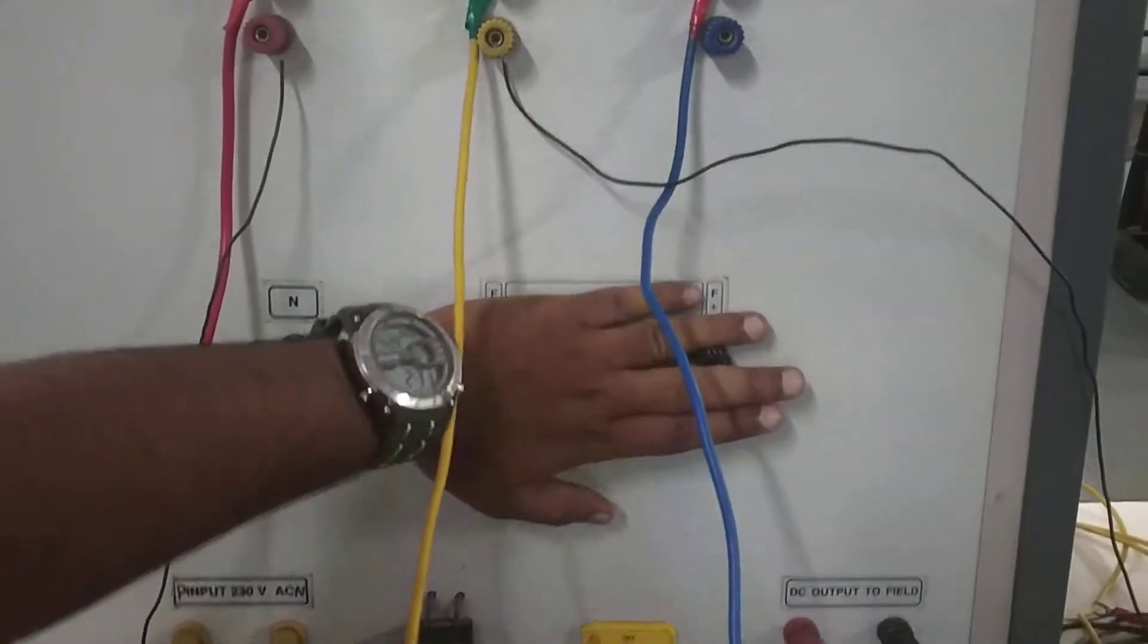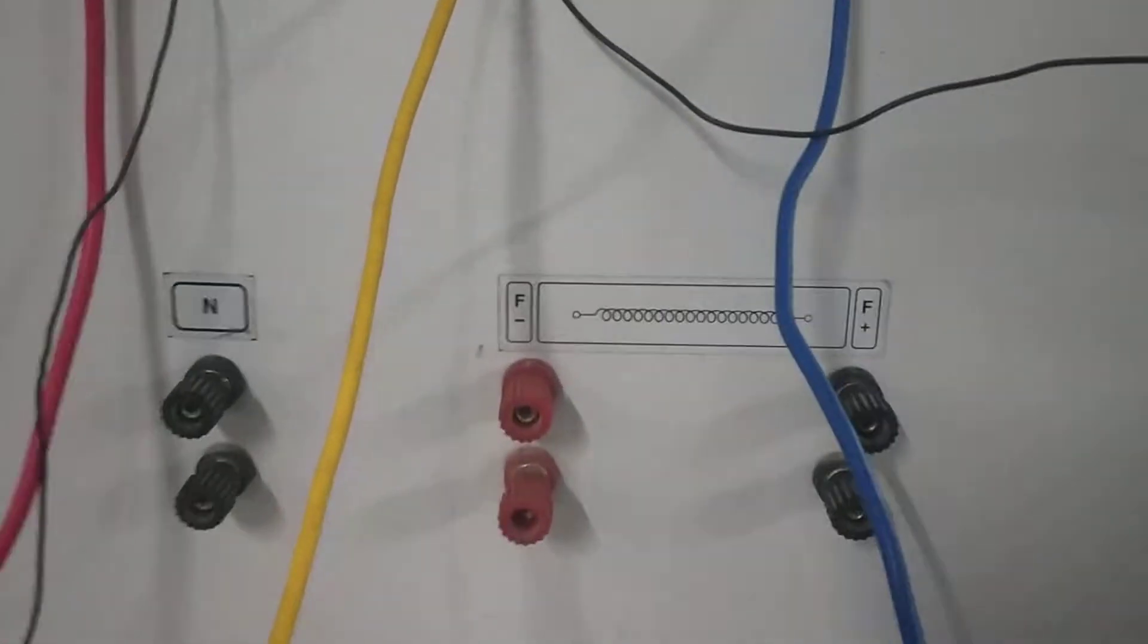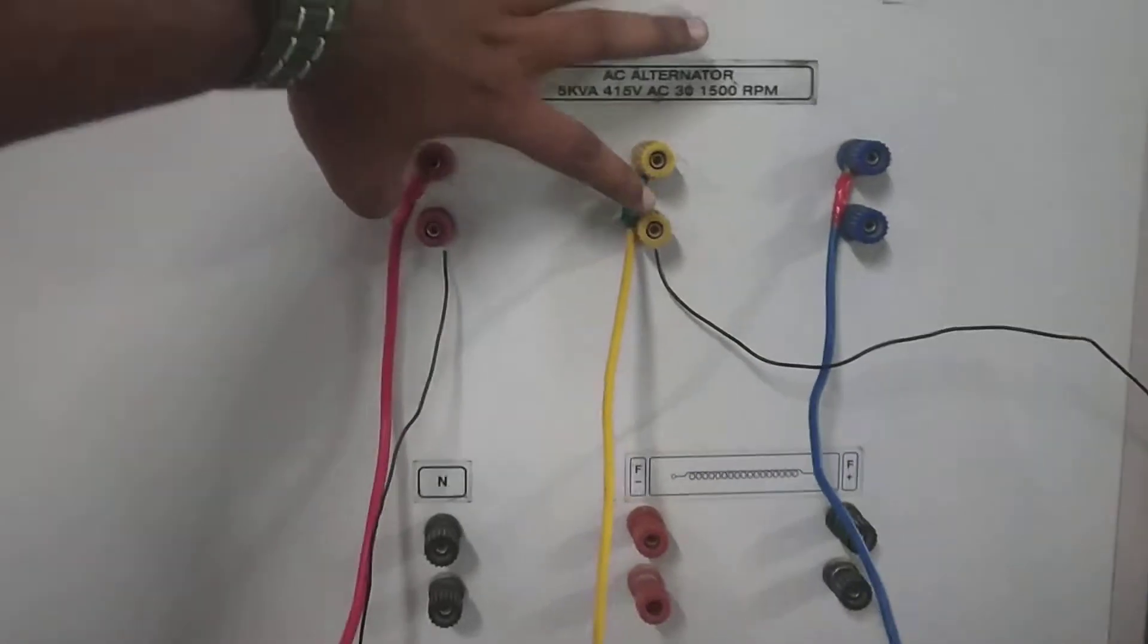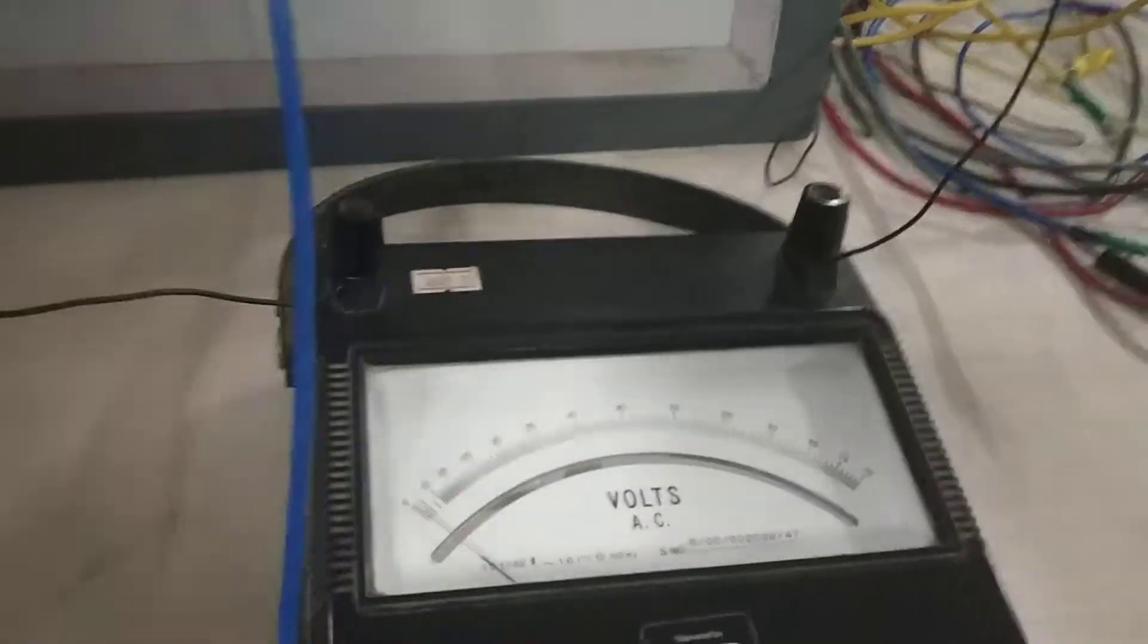Field winding is kept open. Voltmeter is connected across two lines, red and yellow, and the reading of this voltmeter is taken for doing this.